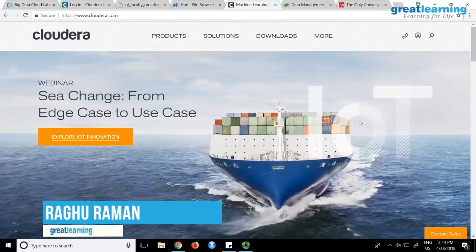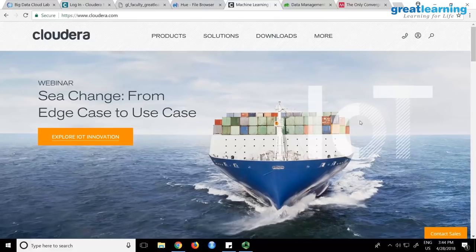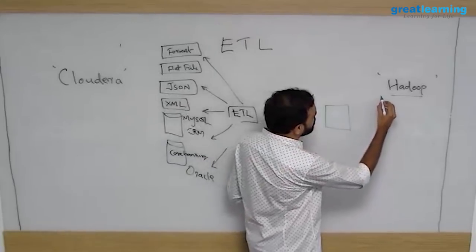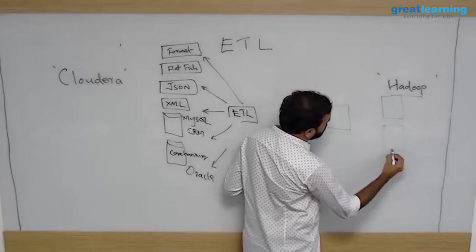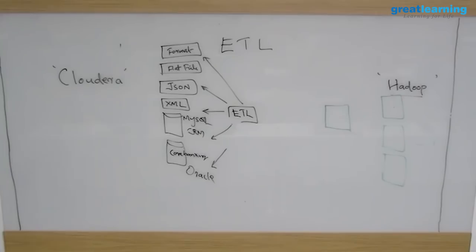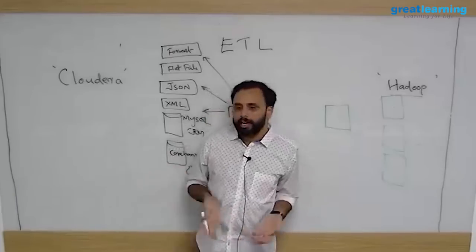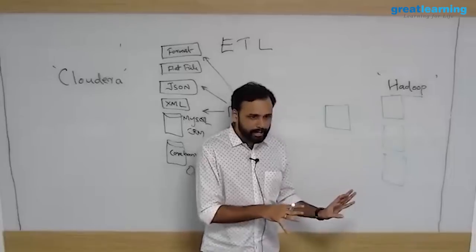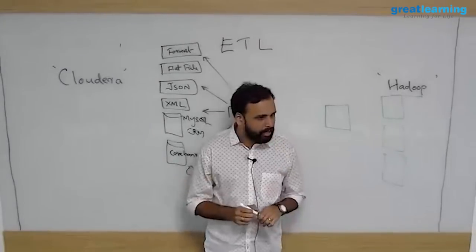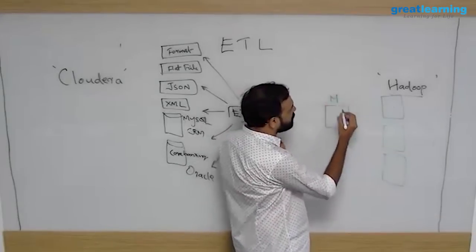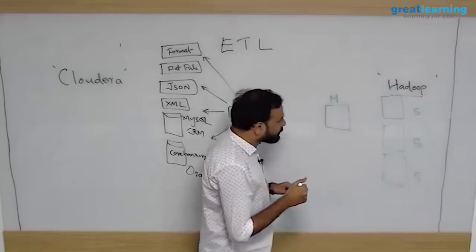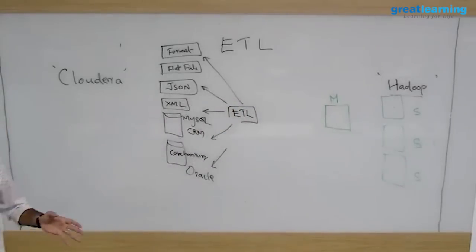Distributed computing is not a new idea — it was already there. In Hadoop, what we are doing is very simple: rather than one machine, you take a bunch of machines. Say four machines, four servers. You can download and install Cloudera or Hortonworks Hadoop on these. While installing, it will ask which machine is master and which is slave. The idea is one machine has to be master and the rest can be slaves.